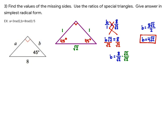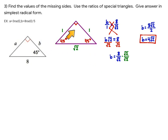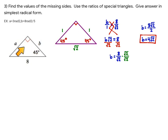Now I need to find a, and I notice that in the parent triangle the two legs are congruent to each other, which implies in this triangle the two legs are also congruent. Therefore a will be the same value as b: 4√2.